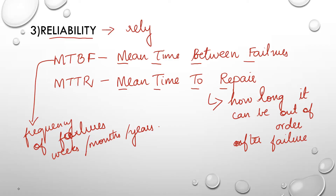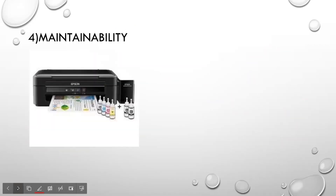So MTTR should be very small for a critical system, and for a non-critical system it is negligible. The third characteristic is reliability, where we studied two terms: MTBF and MTTR. Now we have the fourth characteristic called maintainability — the support or maintenance at the end user or client if a failure occurs. Reliability is inversely proportional to maintainability.